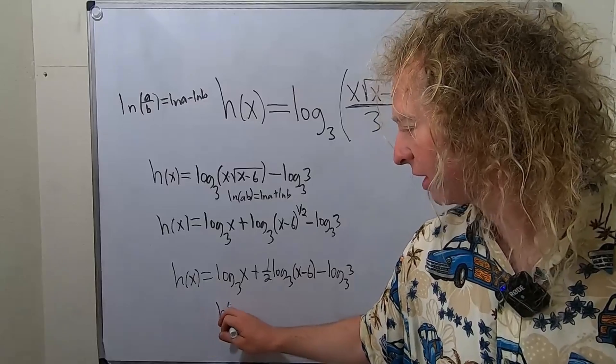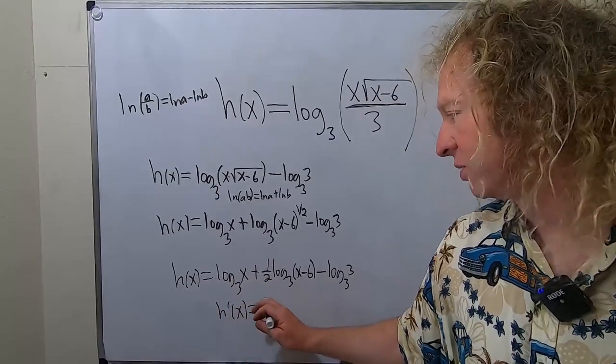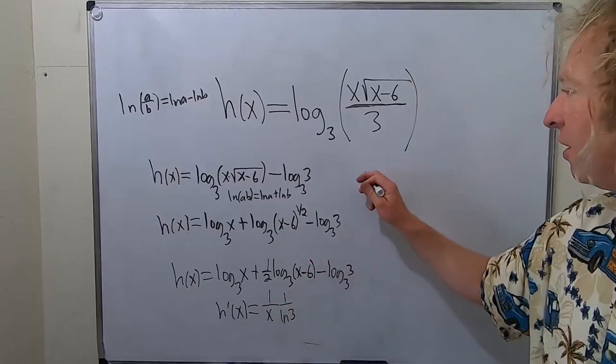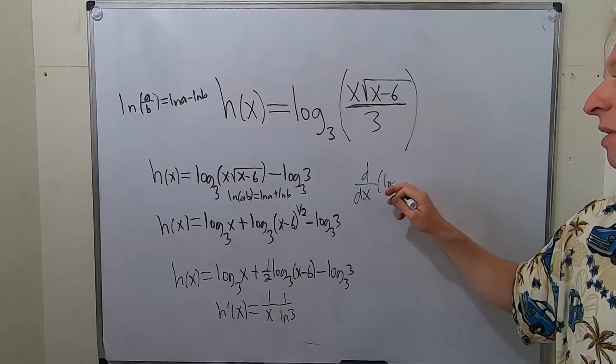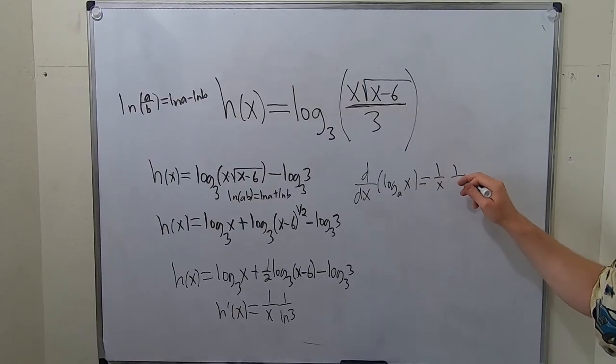So h prime of x. The formula for log base 3 of x is 1 over x, 1 over ln 3. That's the formula. Recall, if you take the derivative with respect to x of log base a of x, this is equal to 1 over x, 1 over ln a.